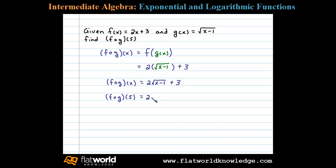So f composed with g of 5 would be equal to 2 times the square root of 5 minus 1 and then plus 3, which equals 2 times the square root of 4 plus 3, or 2 times 2 plus 3, which is equal to 4 plus 3 or 7. So f composed with g of 5 is actually equal to 7.